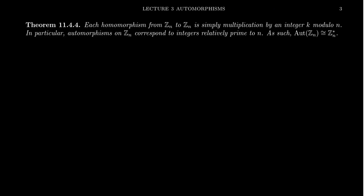Each endomorphism from Zn to Zn is determined by multiplication by some integer K mod n. Therefore, restricting to automorphisms of Zn, these are exactly those elements of Zn which are multiplicatively invertible — that is, elements which are relatively prime to n. This establishes the important property that the automorphism group of a cyclic group is just those elements coprime to it: Aut(Zn) ≅ Zn*, for any n whatsoever.